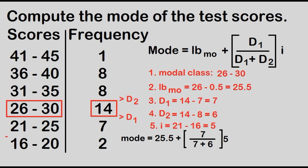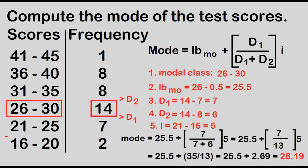This is equal to 25.5 plus the quantity 7 over 13 times 5. This is equal to 25.5 plus 2.69. The mode is equal to 28.19.